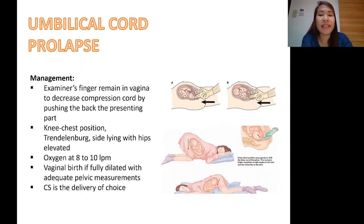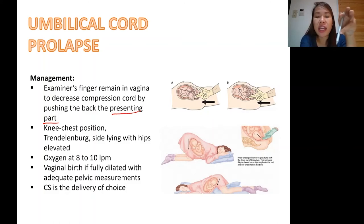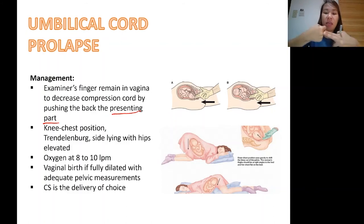So what is the management? When you assess umbilical cord prolapse — as a doctor, nurse, or midwife — the examiner's finger will remain in the vagina to decrease compression by pushing back the presenting part. If this is the head of the baby, you will push the head up so it does not compress the umbilical cord, thereby giving the baby a chance to survive. From the ER, as you rush the patient to the delivery room, keep your hand inside and press the presenting part — not the umbilical cord itself.